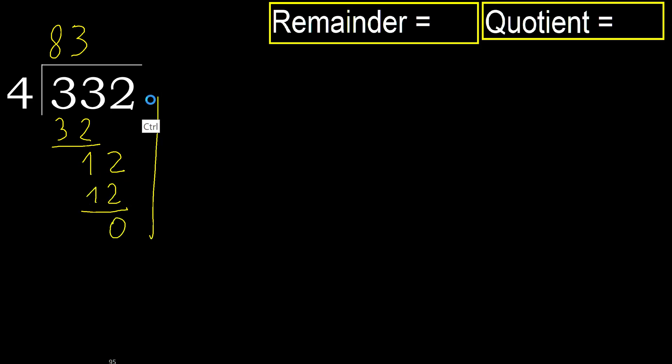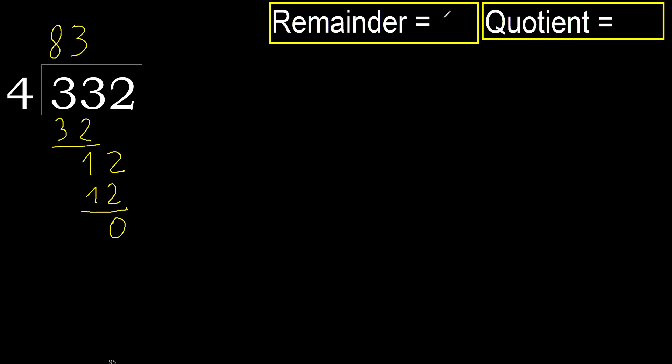Next — that is not a number, therefore finish it. 332 divided by 4 is 83.